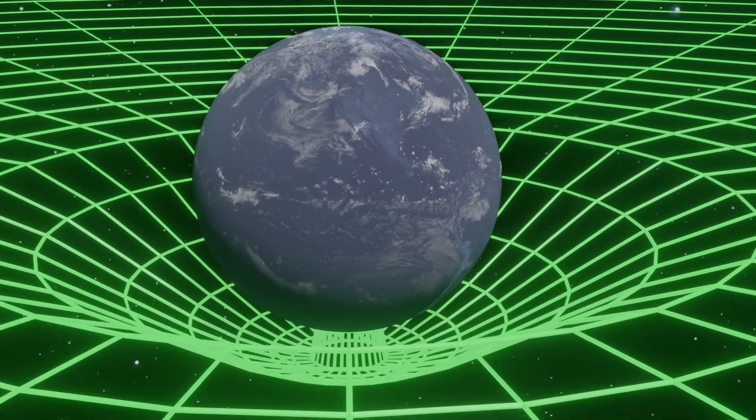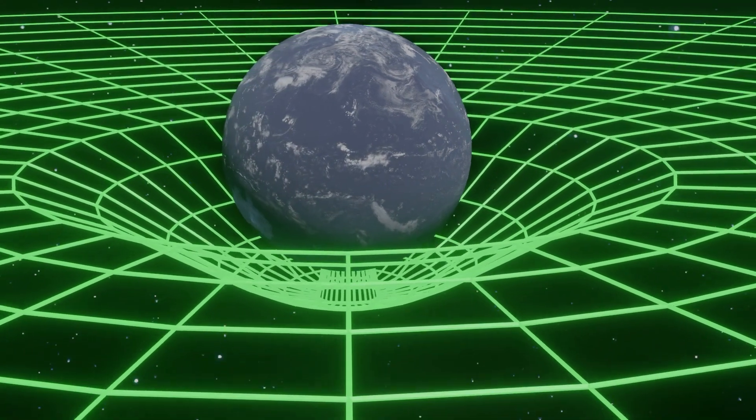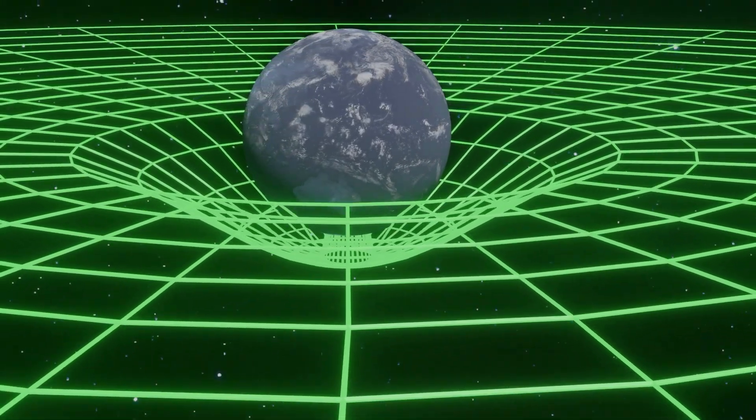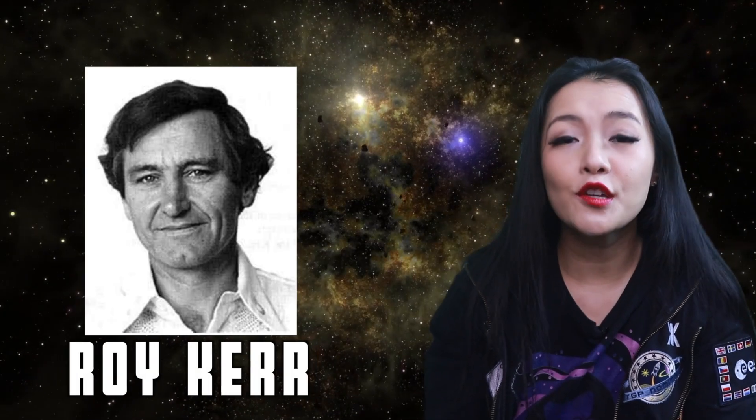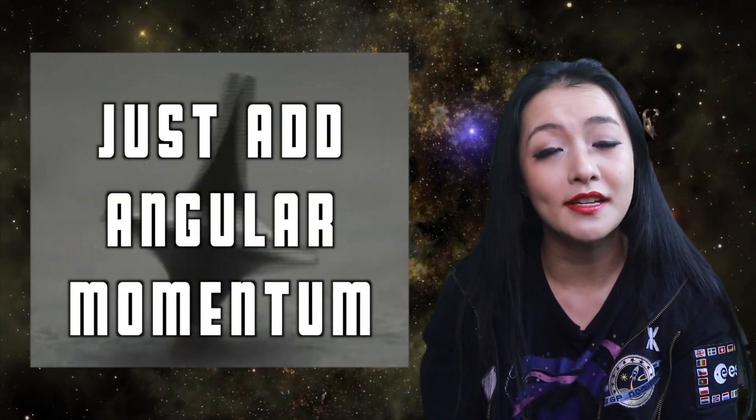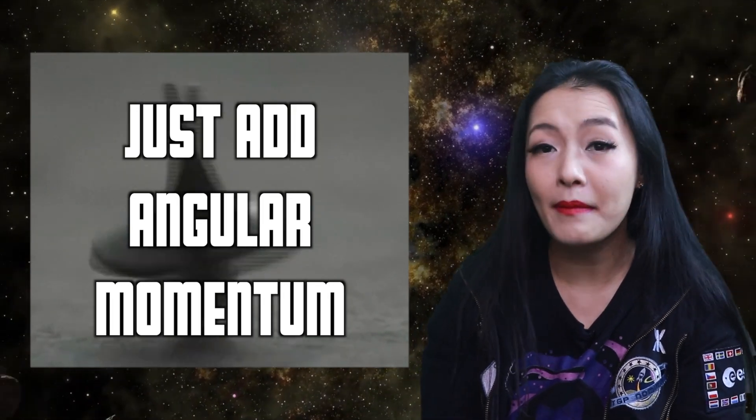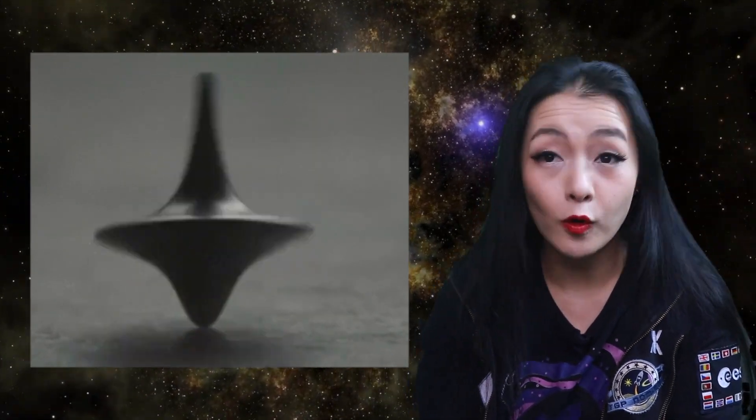But as we all know, in nature, things aren't static. They're moving around. Every celestial body we know of is rotating about an axis. Like our Earth, it spins around our poles. This led to Roy Kerr in 1963 extending his research to develop a solution to Einstein's equations that incorporate angular momentum and causes black holes to spin.